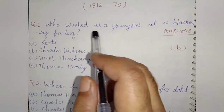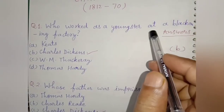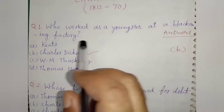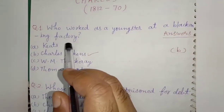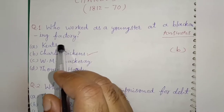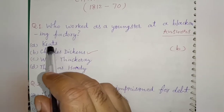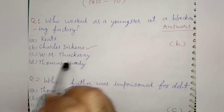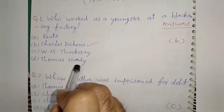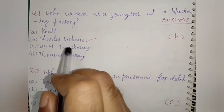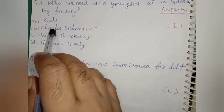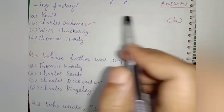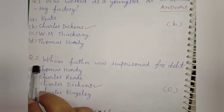Question 1: Who worked as a youngster at a blackening factory? The options are Keats, Charles Dickens, W. M. Thackeray, and Thomas Hardy. The right option is option B, Charles Dickens.